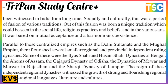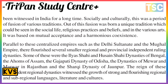Parallel to the centralized empires such as the Delhi Sultanate and Mughal Empire, there flourished several smaller regional and provincial independent kingdoms. Some of these were the Iliyas Shahi and Hussain Shahi dynasties of Bengal, the Gajapatis of Odisha, the city of Mewar, the Maharanas of Rajasthan, and the Sharkis of Jaunpur. The rise of these independent regional kingdoms witnessed the growth of strong regional languages, literature, and cultures.